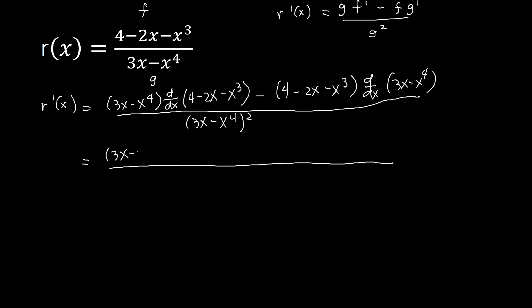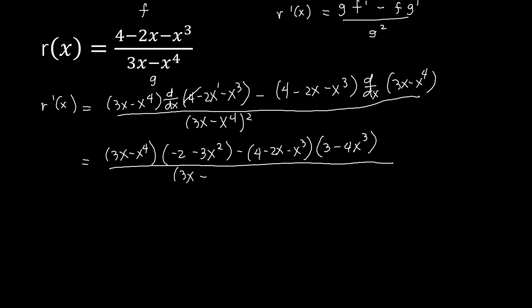So next we get the derivative of the numerator. For negative 2x minus x cubed: the derivative of negative 2x — with power 1 minus 1 equals 0, so x to the power of 0 is 1 — gives negative 2. Then put down 3, so we have minus 3x to the power of 3 minus 1, that's x squared. And then minus 4 — the derivative of the denominator 3x minus x to the power of 4: derivative of 3x gives 3, x to the power of 1 minus 1 is 0, so that's 3. Then minus: put down exponent 4, copy x to the power of 4 minus 1, that's a 3. And then at the bottom, 3x minus x to the power of 4, squared.